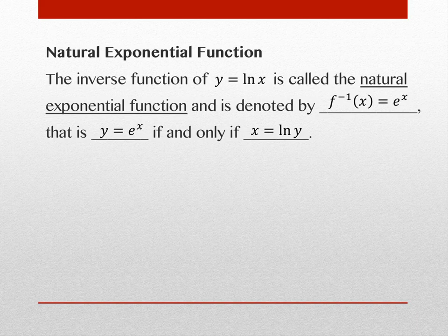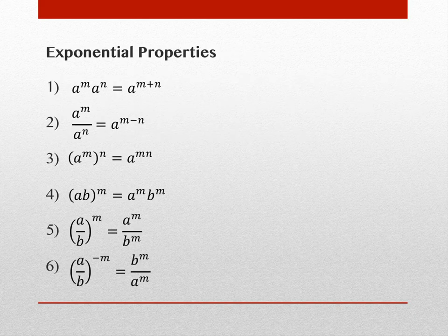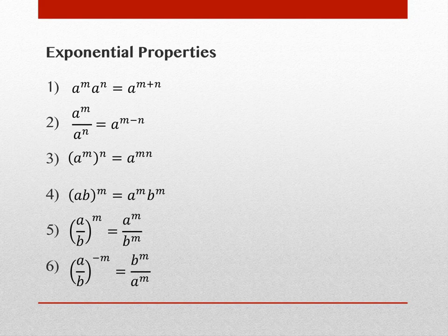It'll be helpful to have some properties, much like we had logarithmic properties. So going back to algebra: these are properties taught in college algebra. There are six of them, and I'll add a couple more. When we have two bases that match, aᵐ · aⁿ, we can add the exponents to get aᵐ⁺ⁿ. For division, aᵐ/aⁿ, we subtract exponents to get aᵐ⁻ⁿ. A power raised to a power, (aᵐ)ⁿ, we multiply exponents to get aᵐⁿ.